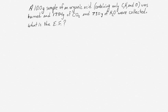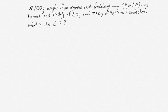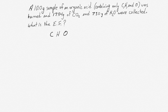In our second example, we'll also be calculating an empirical formula, but this time we'll be doing it based on a combustion analysis. In a combustion analysis, you burn an organic sample in oxygen and weigh the products that are produced, and this information lets you deduce the empirical formula. In our case, a 10-gram sample of organic acid that contains only carbon, hydrogen, and oxygen was burned. We don't know what the subscripts are — we're looking for those — so we'll call them X, Y, and Z for now.